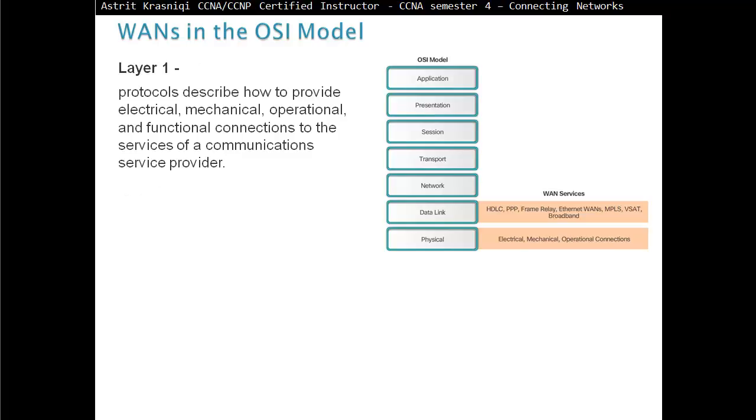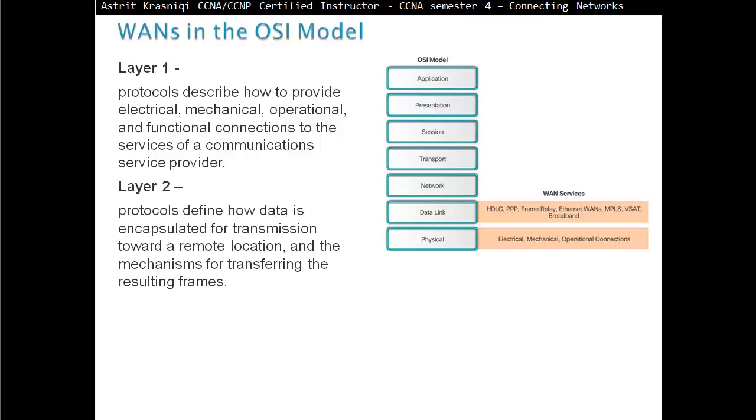Layer 1 protocols describe how to provide electrical, mechanical, operational, and functional connections to the services of the communication service provider. Layer 2 protocols define how data is encapsulated for transmission towards a remote location and the mechanism for transferring the resulting frames. A variety of different technologies are used, such as Point-to-Point Protocol PPP, Frame Relay, and ATM. We will cover in Chapter 3 Point-to-Point Protocol and Chapter 4 Frame Relay.